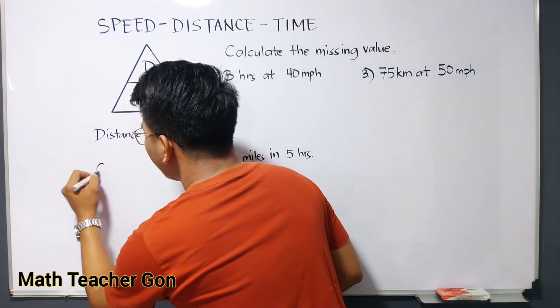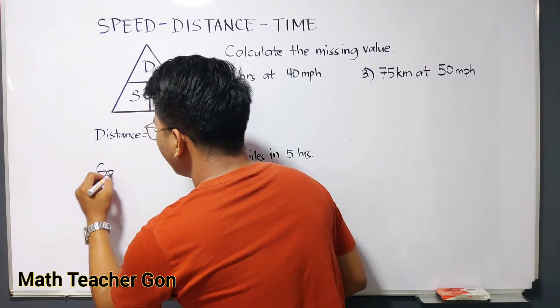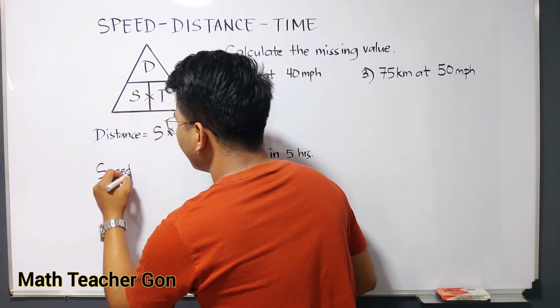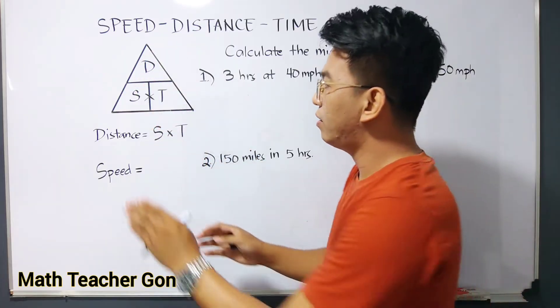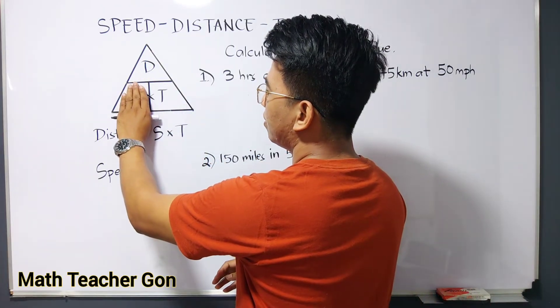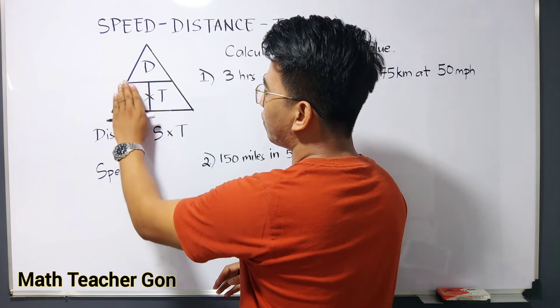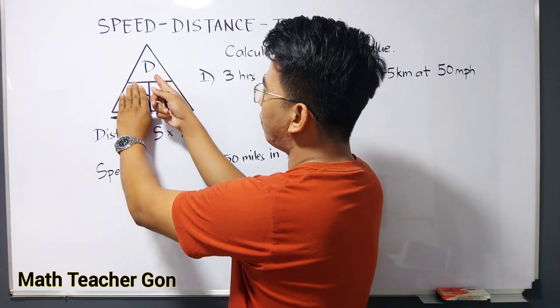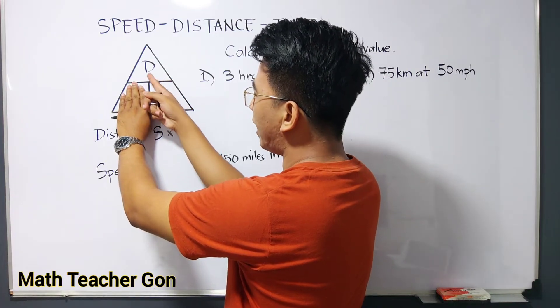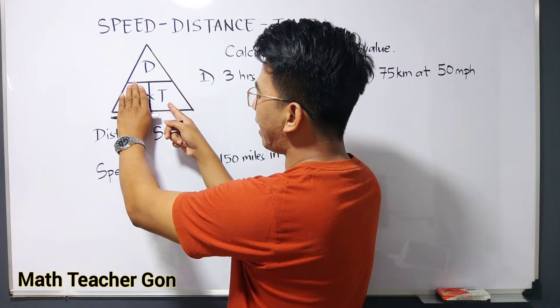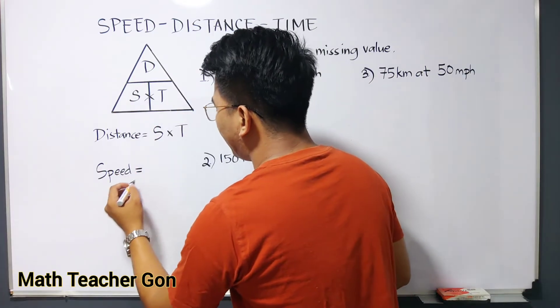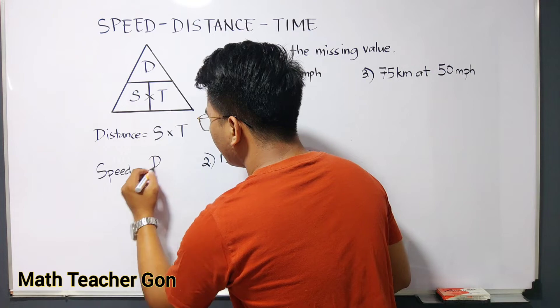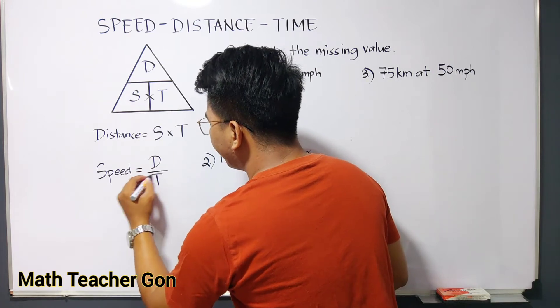Next, if you will be calculating for the speed, which is S, using this triangle, as you can see, we will cover this one, and you have D over distance over time. So our formula is speed, or S, is equal to D over time.